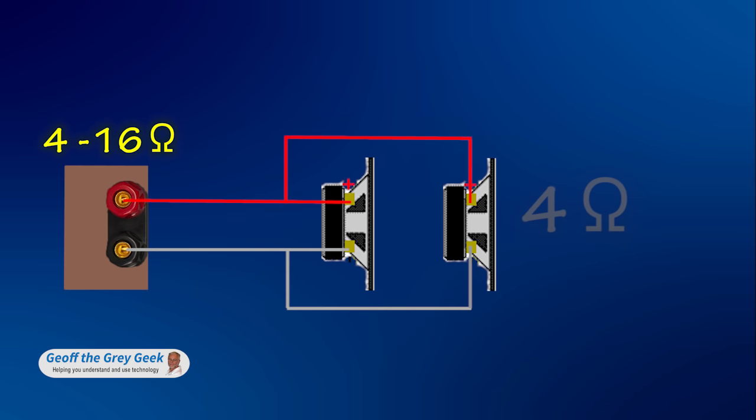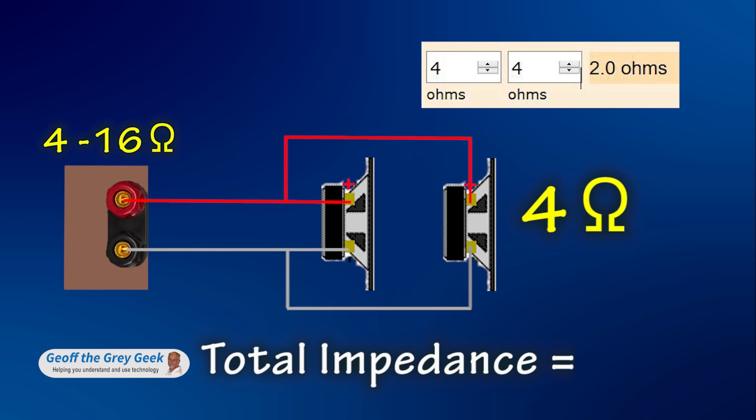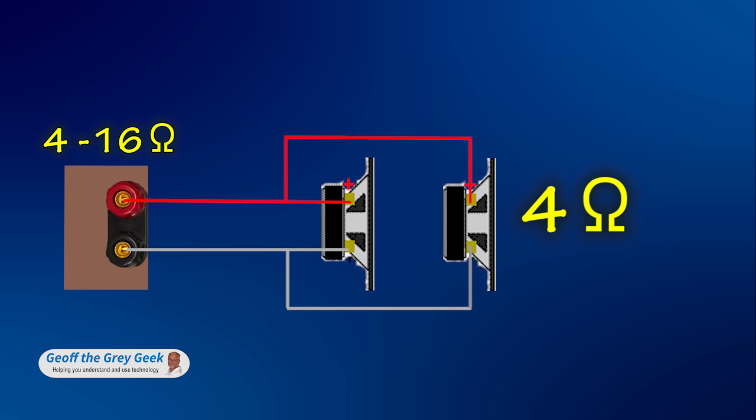Now what happens if both speakers are 4 ohms? The calculator tells us the total load impedance is now only 2 ohms, way below the minimum for the amp.